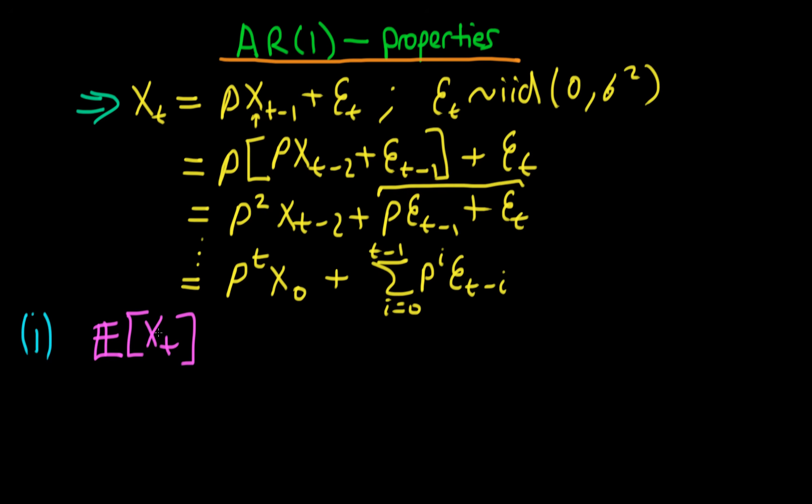Well, if we apply the expectations operator to this bottom expression we have for Xt, then we get that this is equal to ρ^t, because ρ is just a constant so the expectations operator just passes straight through that, times the expectation of X0.